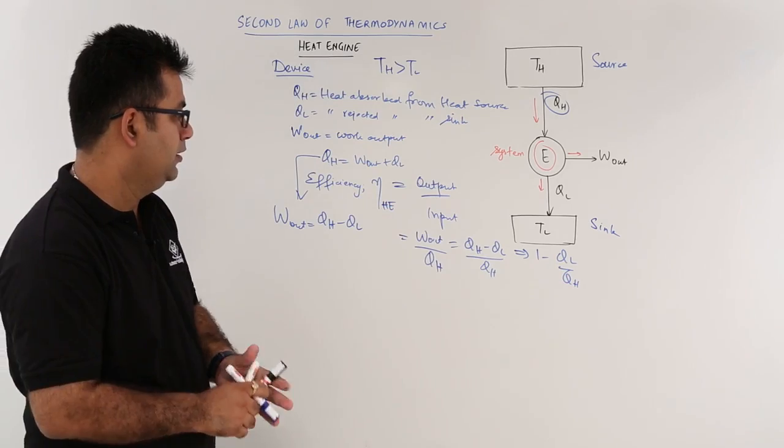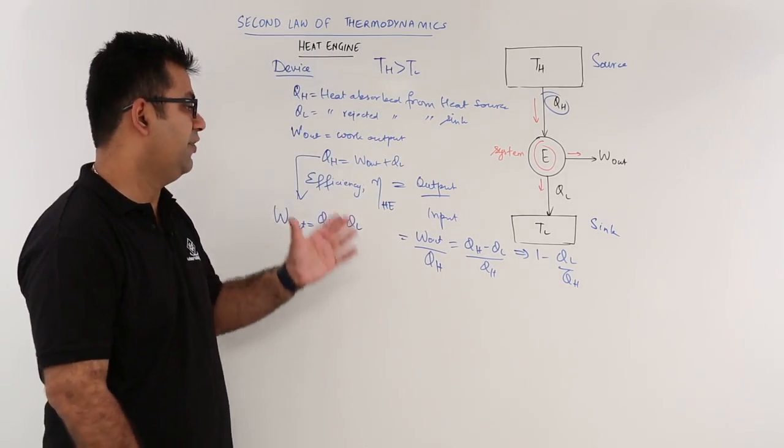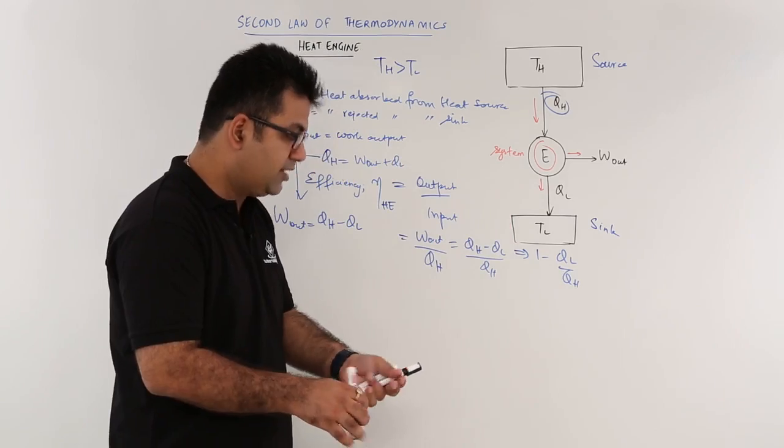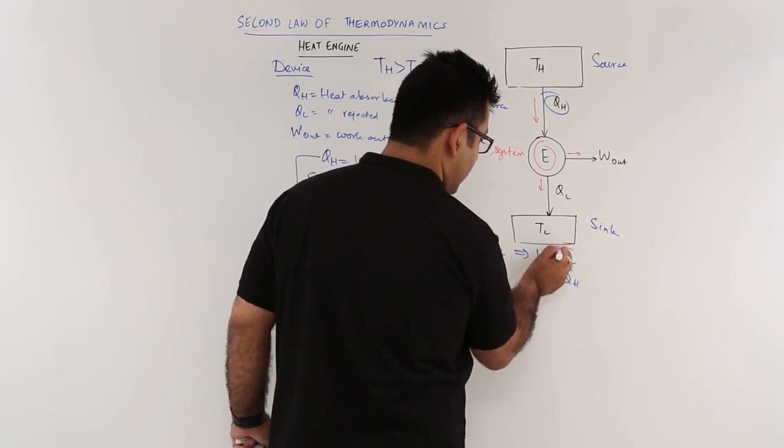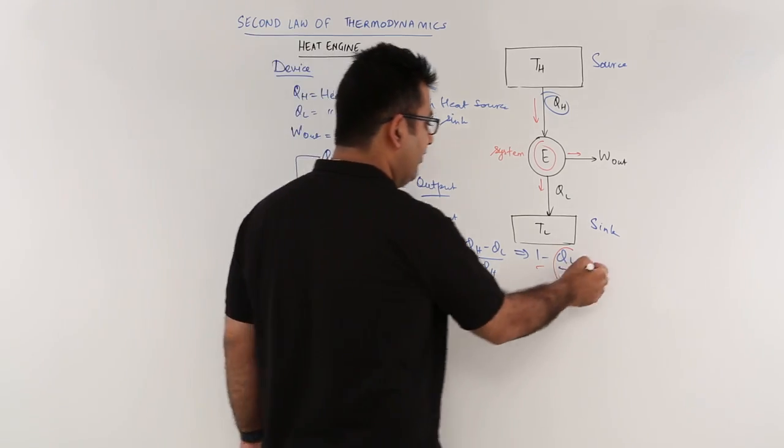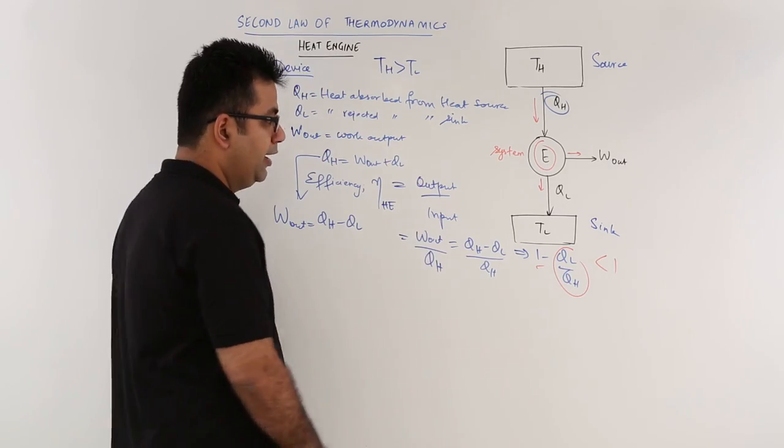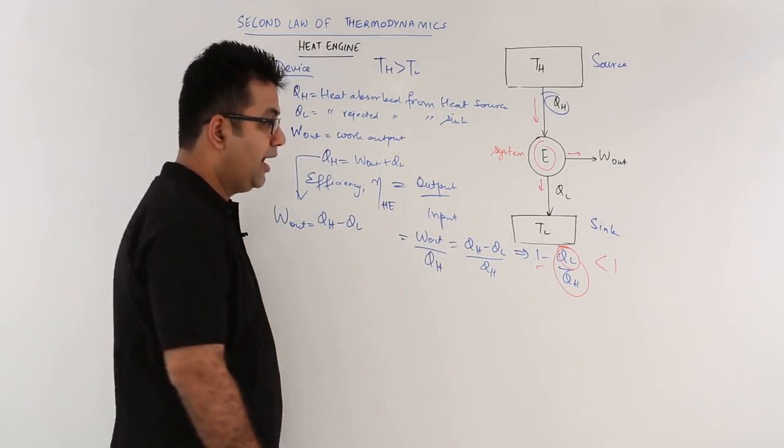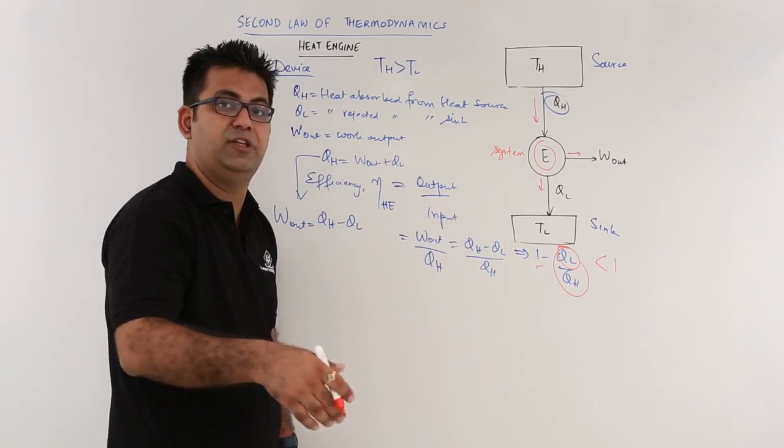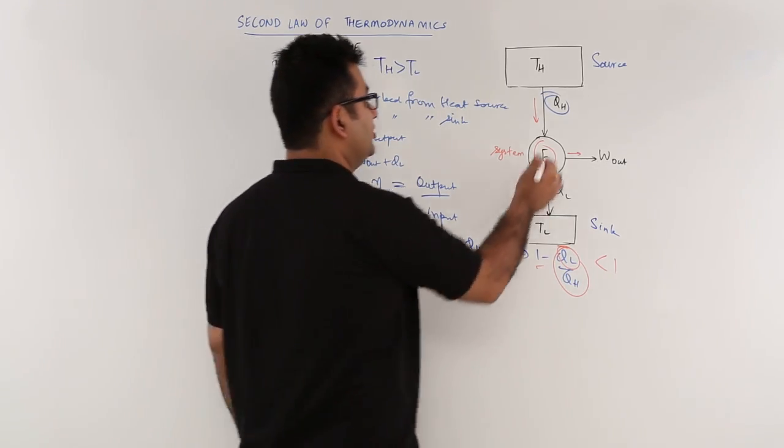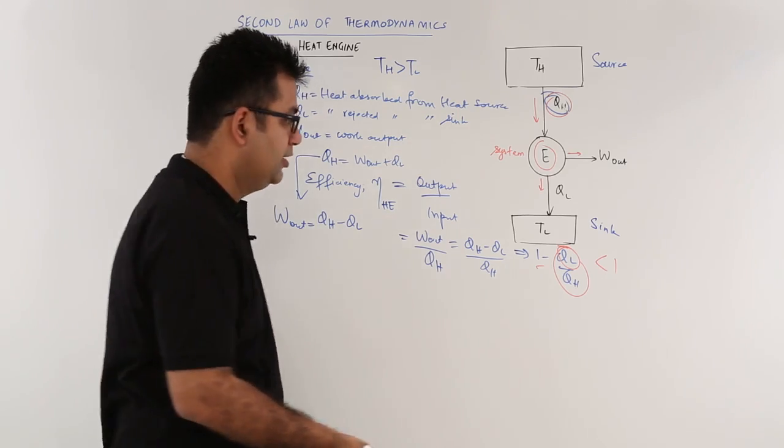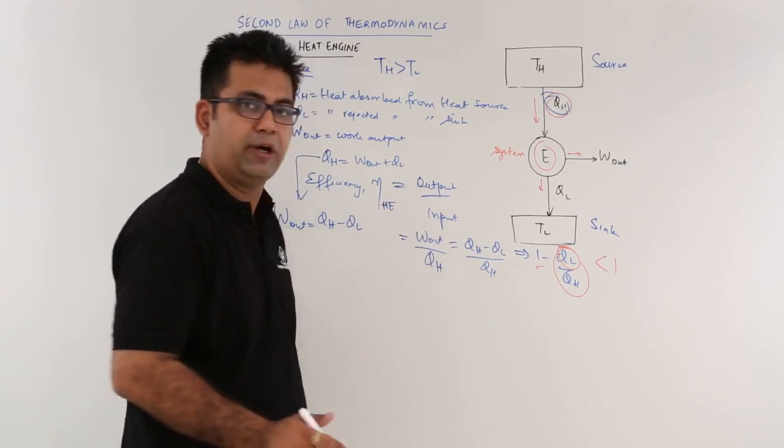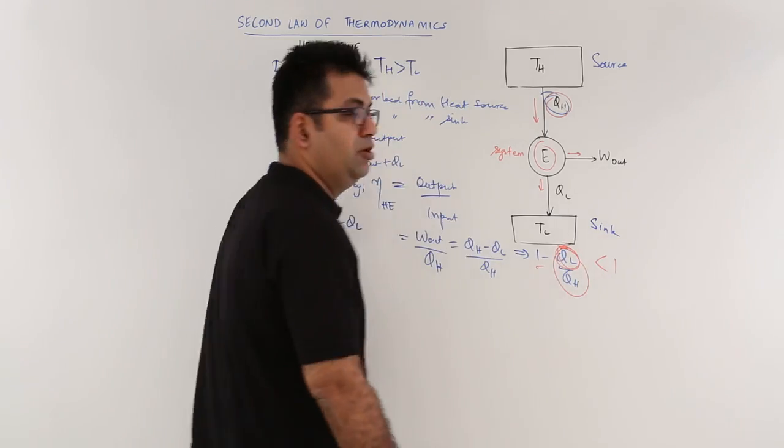So this is the mathematical relation for the efficiency of a heat engine. Now it clearly shows that the efficiency of the heat engine is always less than 1, because you are subtracting some fraction from unity. So this entire value will be less than 1. Now to make it equal to 1, that is 100% efficiency, you would have to reduce QL, either you reduce QL or reduce it to zero, which is not possible at all. You can only possibly increase QH. So by increasing QH then only you can increase your efficiency which is close to 100%. To make it exactly equal to 100%, you will have to reduce QL to zero, which is not possible at all.